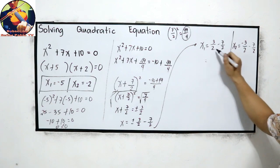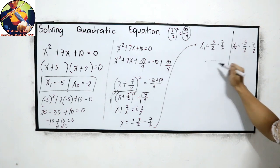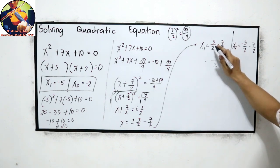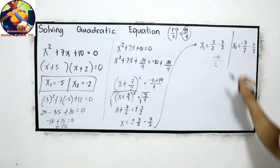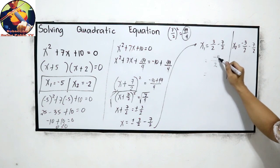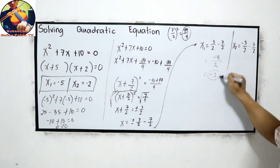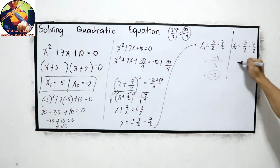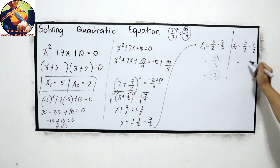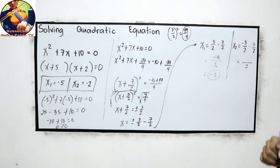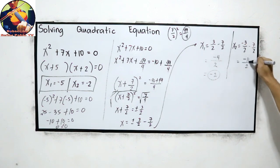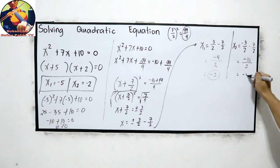Since the fractions have the same denominator, we copy the denominator 2. For x sub 1: 3 minus 7 is negative 4, and negative 4 divided by 2 is negative 2. For x sub 2: negative 3 minus 7 is negative 10, and negative 10 divided by 2 is negative 5.